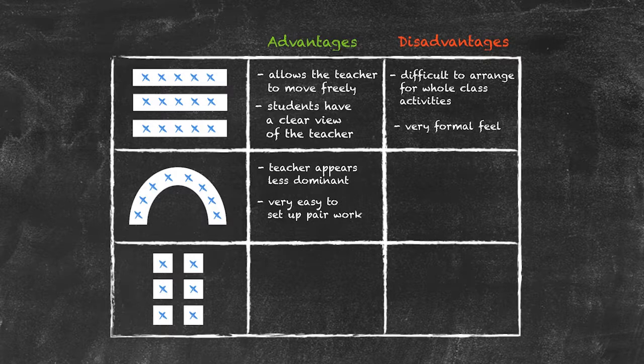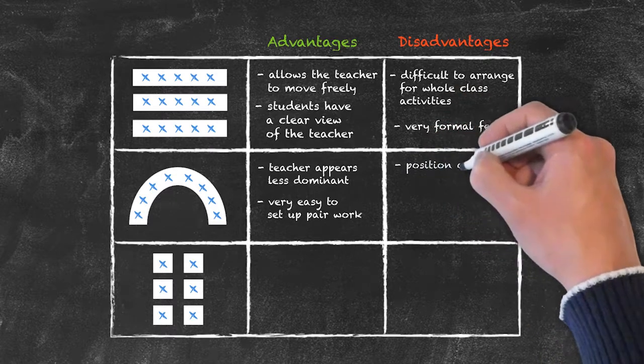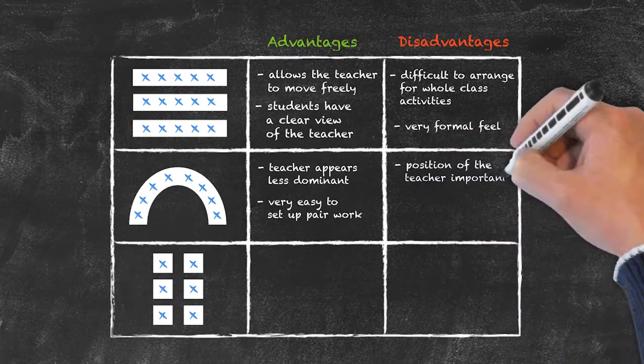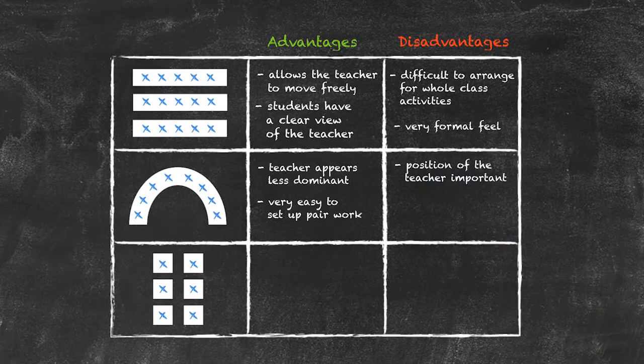They will lose a lot of information by not being able to see the teacher's mouth. So one of the major disadvantages is that the position of the teacher becomes very important — specifically not moving into that horseshoe.